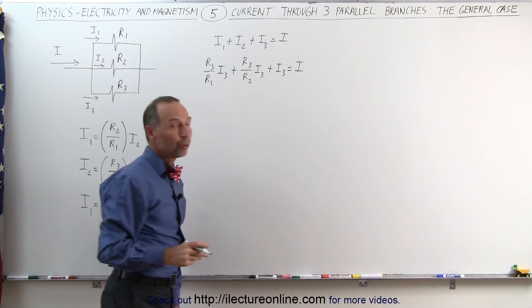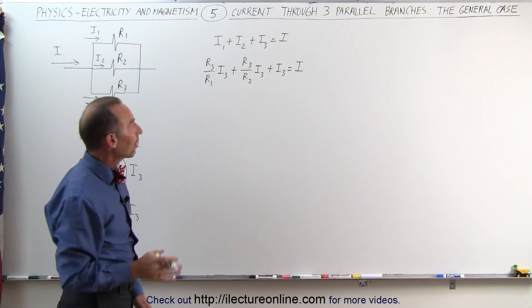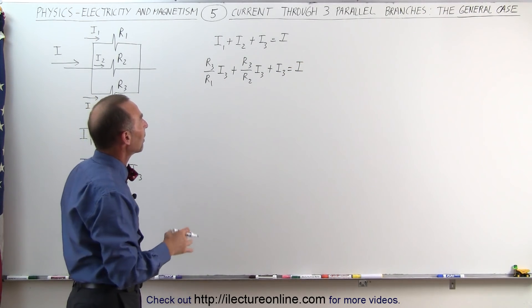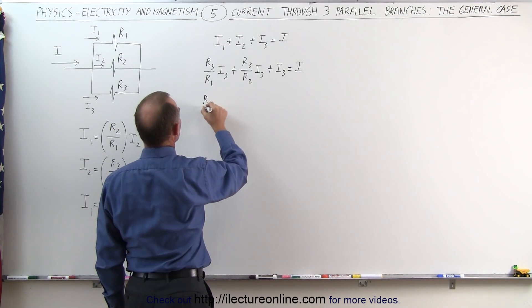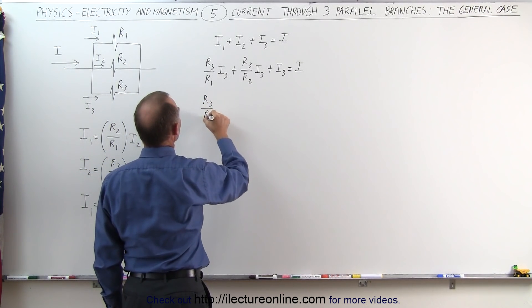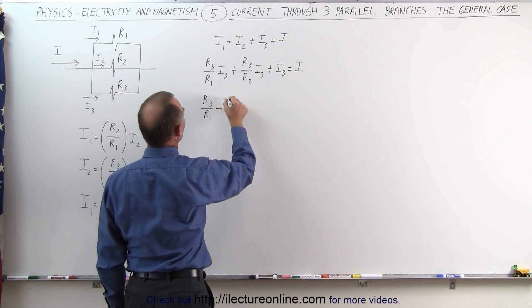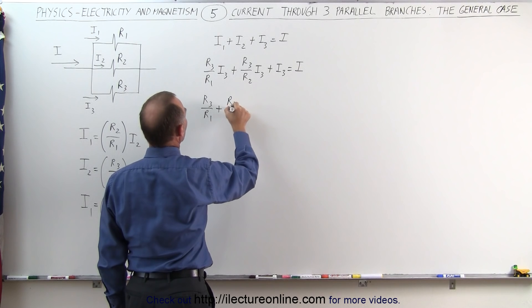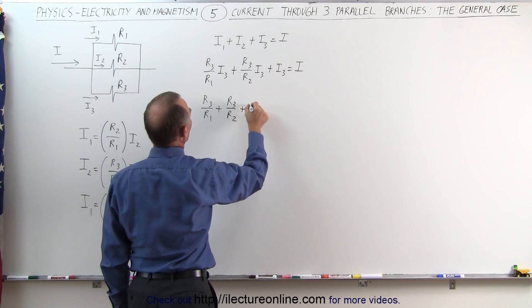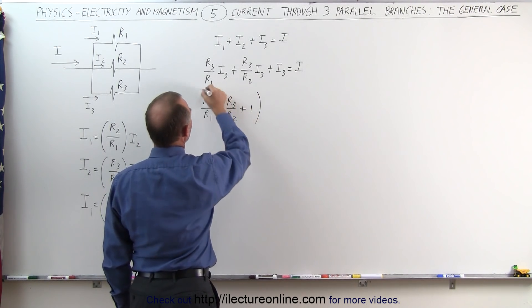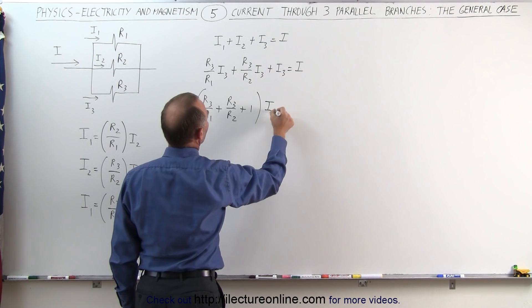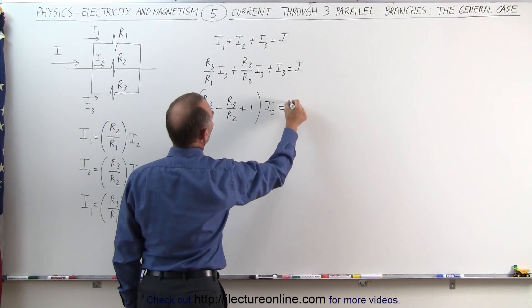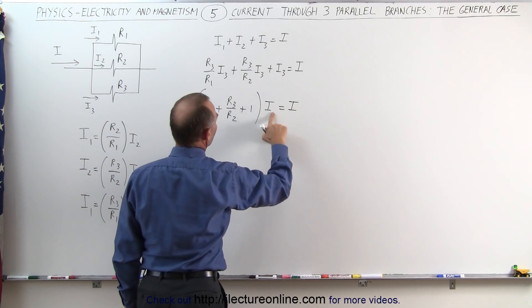We can factor out an I3, which makes this look as follows: R3 over R1 plus R3 over R2 plus 1, all times I3, equals the total current I.